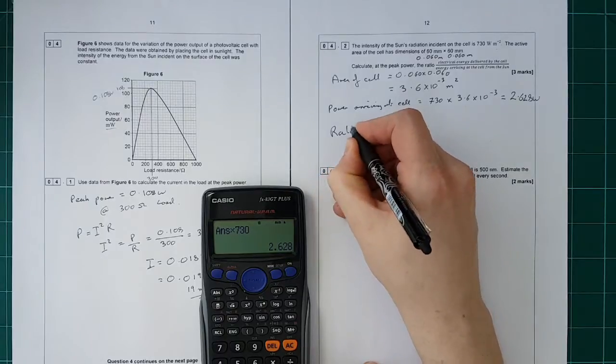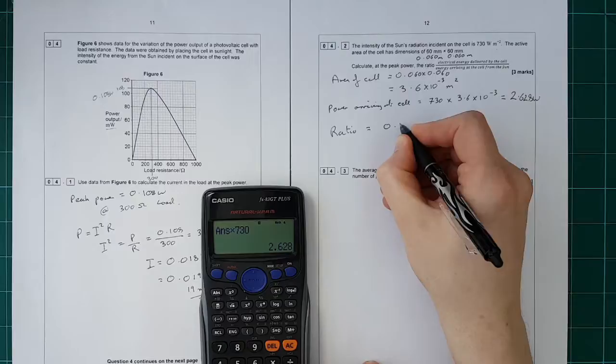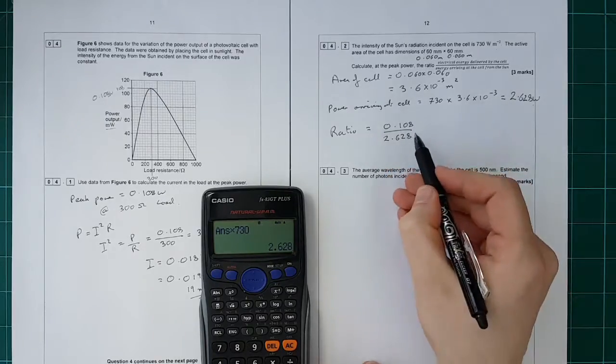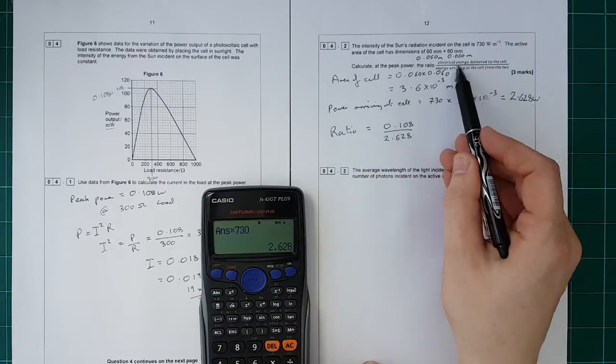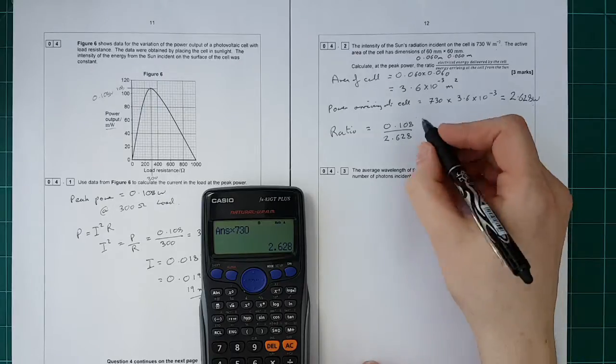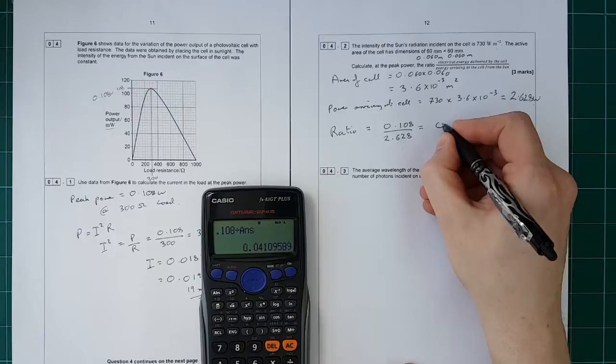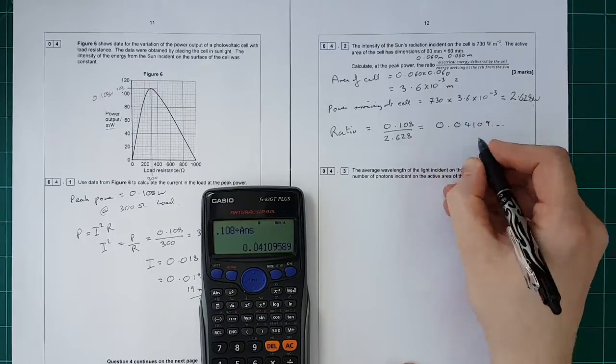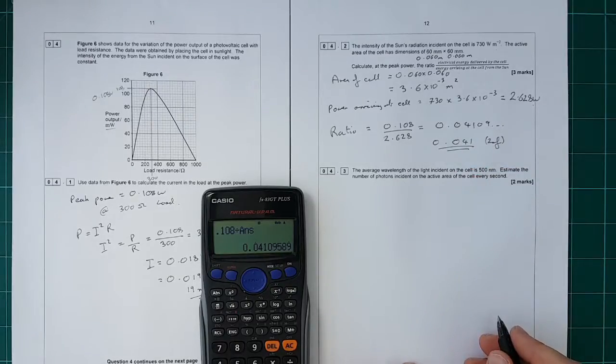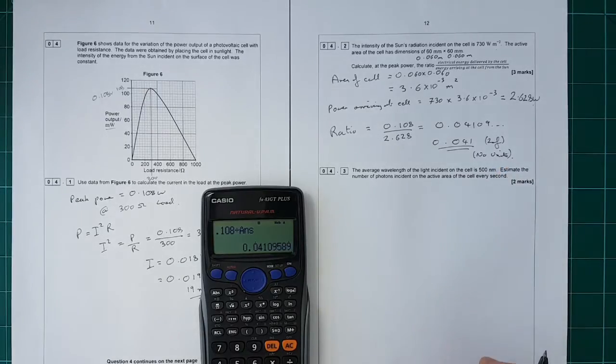So the ratio equals our peak power, 0.108 watts, divided by the amount that arrives, 2.628. Each second the electrical energy will equal that in joules, so that's fine. We get 0.108 divided by the previous answer, 0.04109, so to 2 SF: 0.041, with no units because it's a ratio.